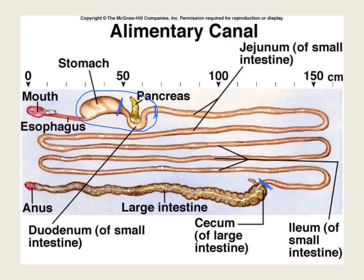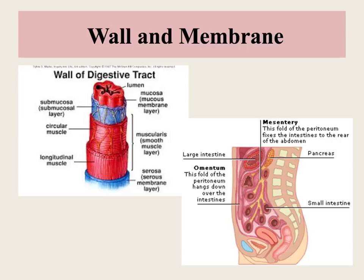Maybe we should call it the absorption system — digestion and absorption! The wall of the digestive system is very similar no matter where you are, from the pharynx at the end of the mouth all the way out to the anus. It basically has four layers.